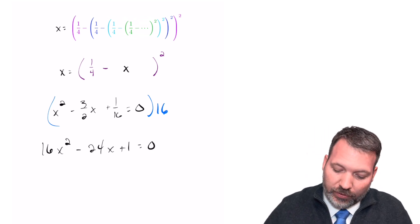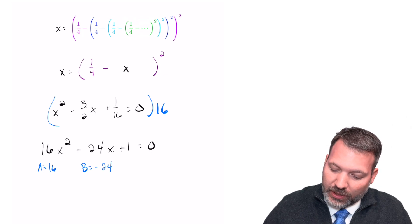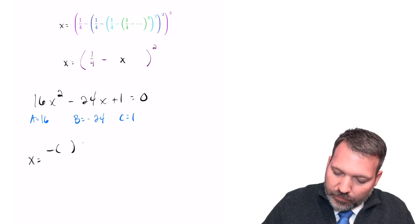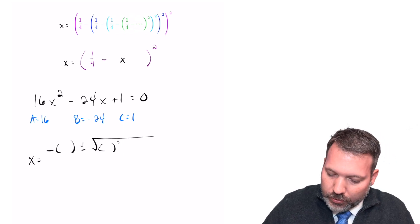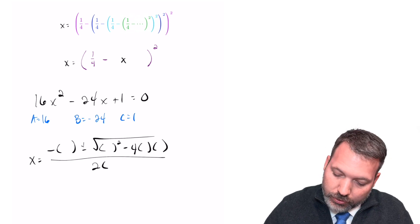all of those denominators, giving you the quadratic equation 16x squared minus 24x plus one equals zero, which could then be solved with the quadratic formula. a equals 16, b equals negative 24, and c equals one. x is equal to negative b plus or minus the square root of b squared minus 4ac all over 2a.